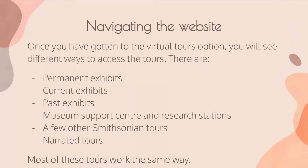As for how to navigate it, you'll see a few different options. There's permanent exhibits, current exhibits, and one feature you wouldn't get in person — past exhibits. So something that was taken down, you're still able to see it. There's also a support center and research stations, some other tours, as well as narrated tours.